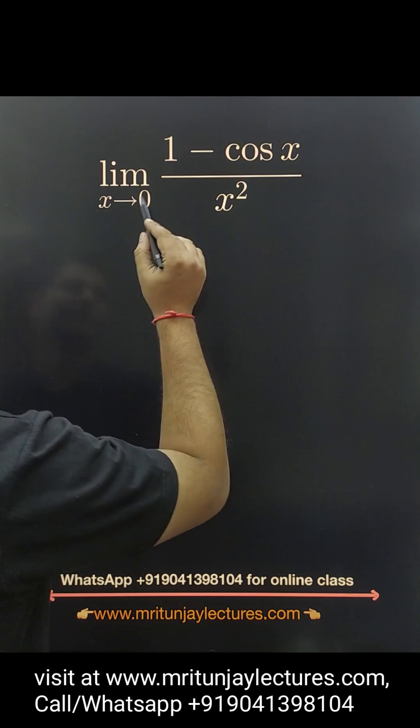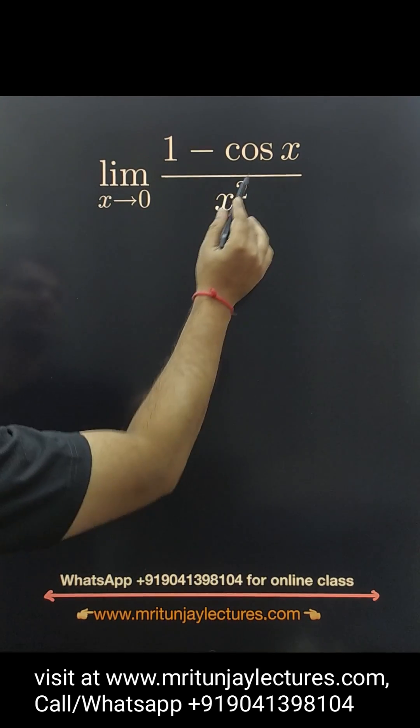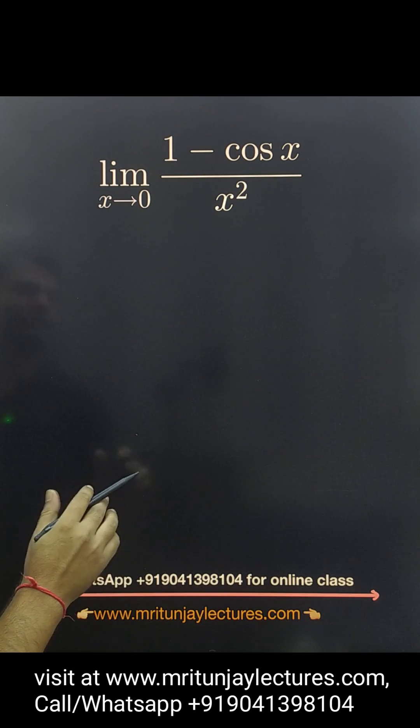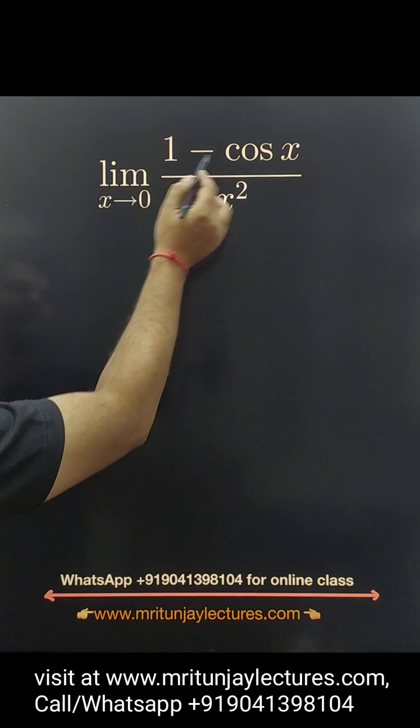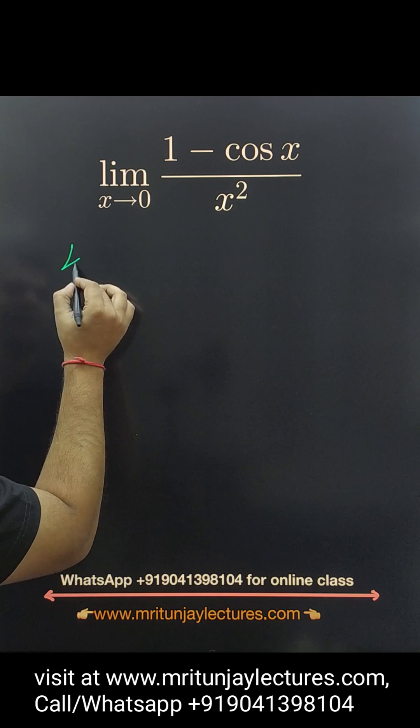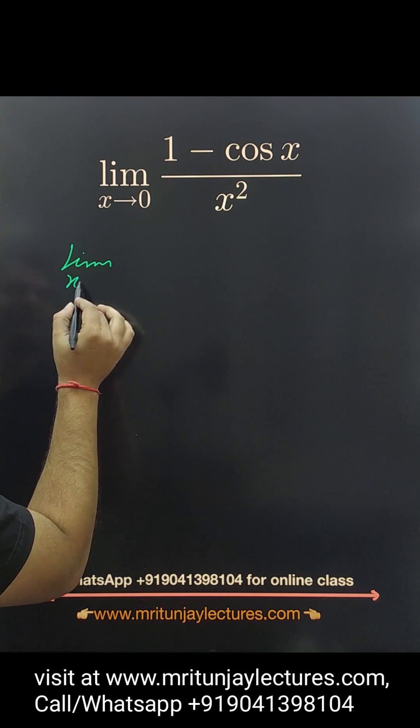Now, question of the day: Determine limit x tends to 0 of 1 minus cos x upon x square. How can we do this type of problem? Simply, this one written: limit x tends to 0.